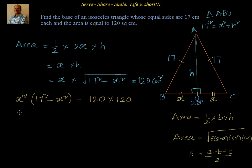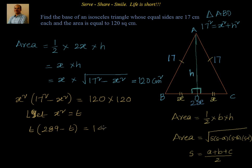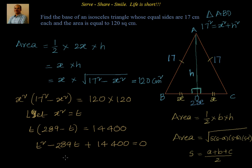Now I have a quadratic equation in terms of x². Let x² = t. Then t·(289 − t) = 14400. This is a quadratic equation. Taking everything to one side gives t² − 289t + 14400 = 0. We need t such that the sum is 289 and the product is 14400. Also remember, t must be a perfect square since t = x².